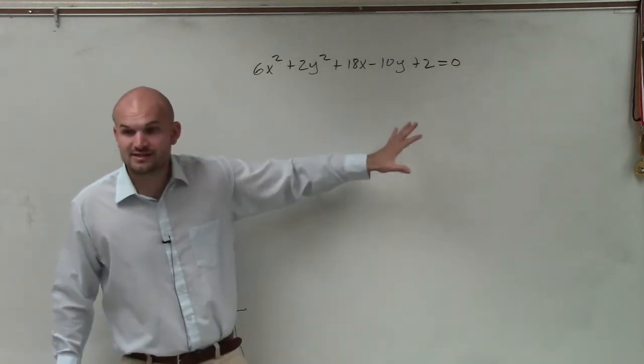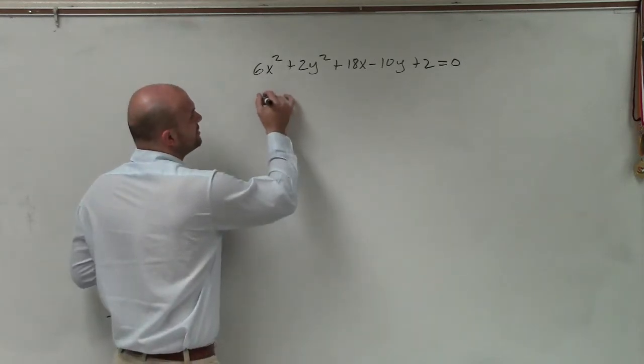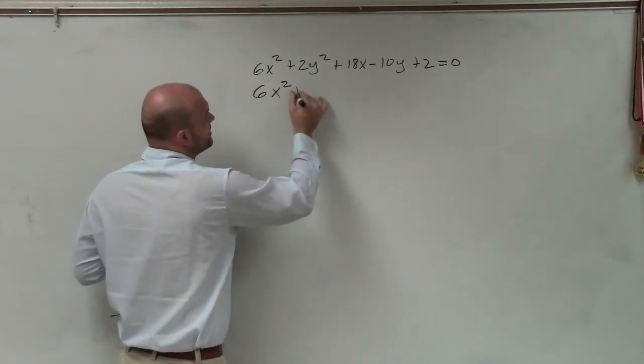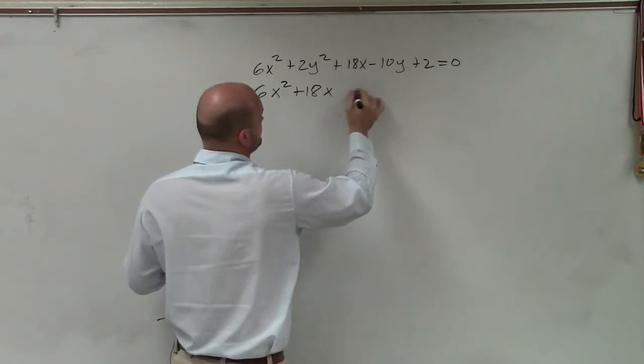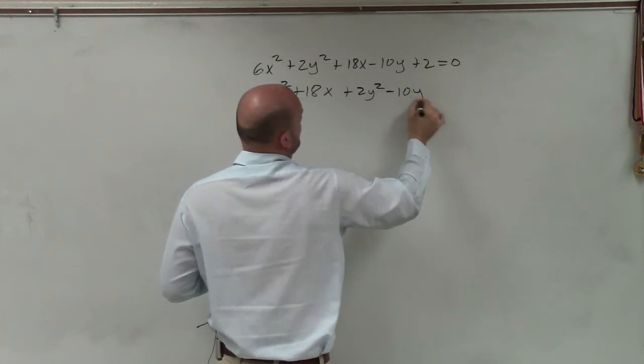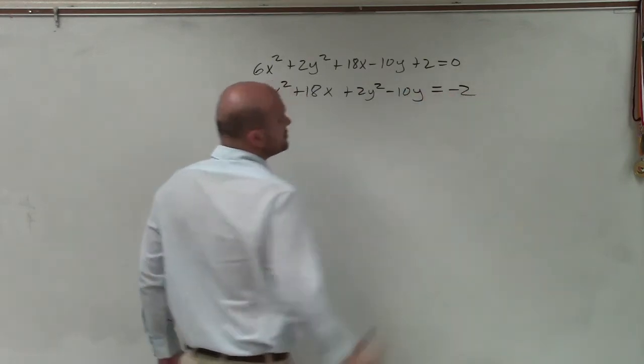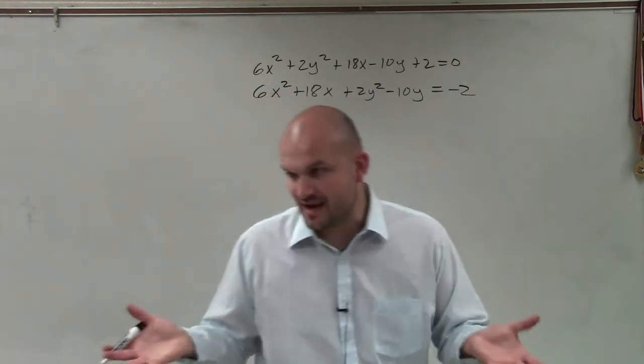So the main important thing, right, we need to write this into our form for ellipses. So the first thing I'm going to do is group the x's and group the y's. And then I'm just going to put the two on the other side, because remember, it has to equal 1 for the ellipses.